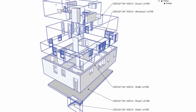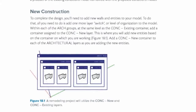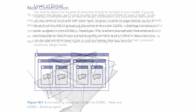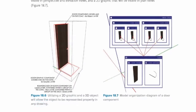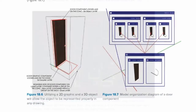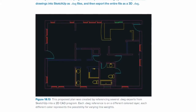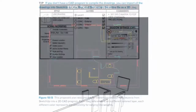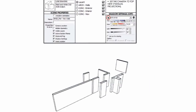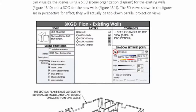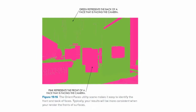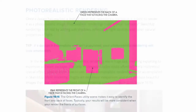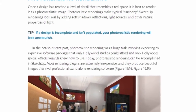In the schematic design chapter, you will learn how to transition the completed existing conditions model to a proposed conditions model, then begin designing using a clear set of rules for layering and model organization. Once a design is underway, you can easily export background drawings for consultants using the clear instructions provided in the scene organization diagrams. In the design development chapter, you will learn best practices for rendering in SketchUp, and how to use the orient faces utility scene to prepare a model for photoreal rendering.